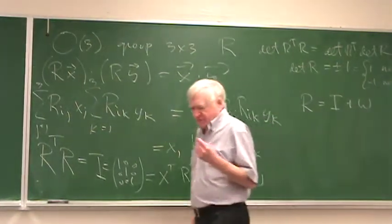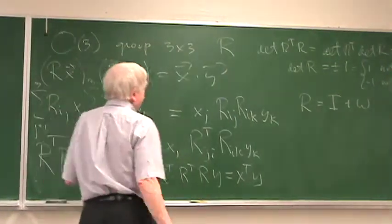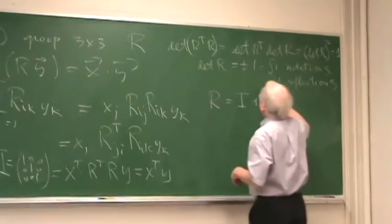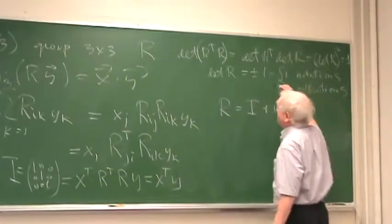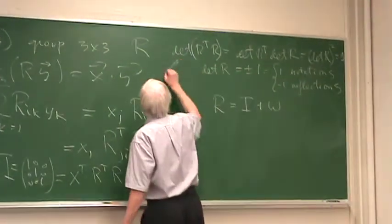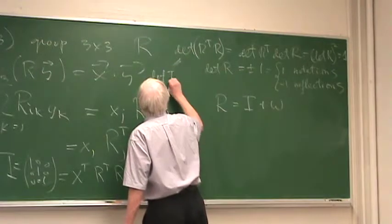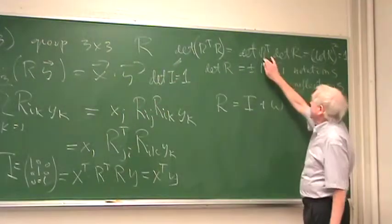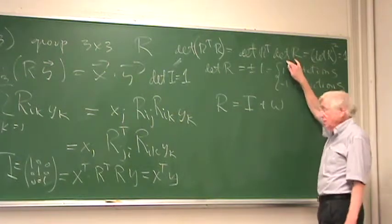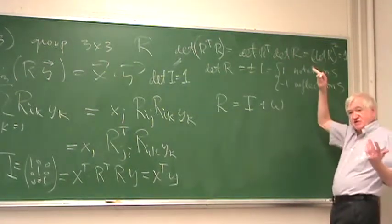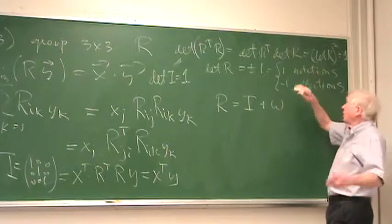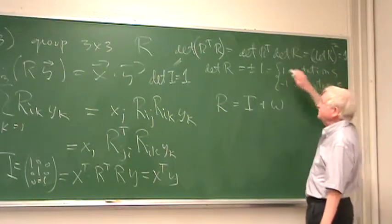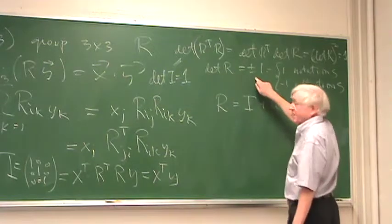But you know that the determinant of a product is the product of the determinants, so the determinant of R transpose R, which is the determinant of the identity, which is certainly one, is equal to the determinant of R transpose times the determinant of R. But the determinant of R transpose is the same as the determinant of R, so the determinant of R squared is one. That means the determinant of R is plus or minus one.